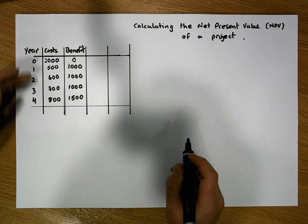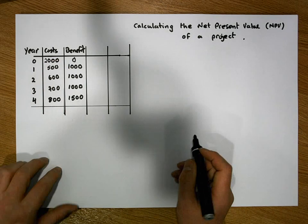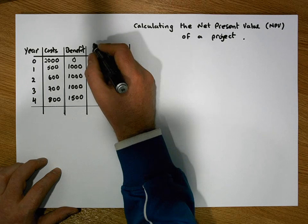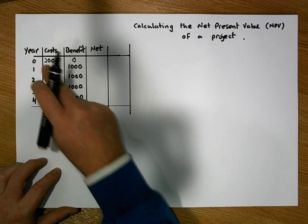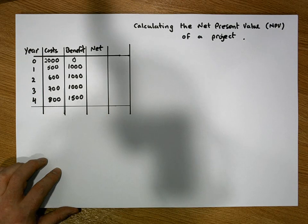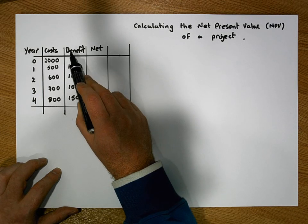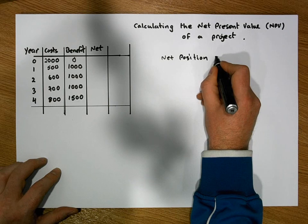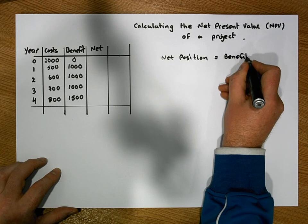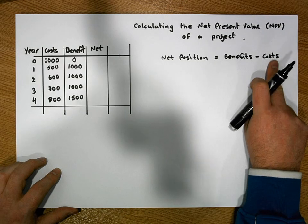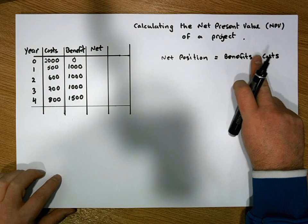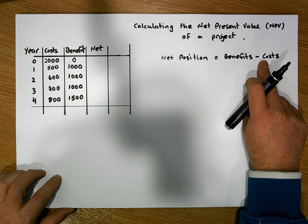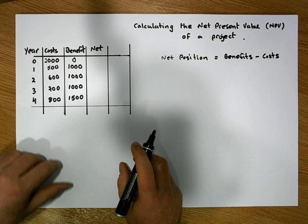Now we should calculate the net position for each year — the balance net of costs. The net position is simply equal to benefits minus costs, where costs are listed as positive values. If the value is positive, we've made a profit for that year; if negative, we've made a loss.